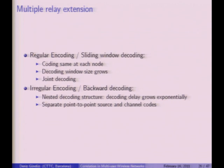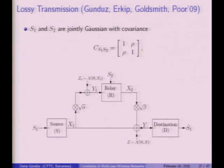If you want the simple separation scheme with existing source and channel codes, you must use backward decoding, introducing delay. This is especially problematic in larger networks because the delay grows exponentially with the number of relays. So the choice between joint coding and separated coding has real practical consequences: joint coding enables real-time sliding window decoding, while separation requires exponentially growing delay in multi-hop relay networks.